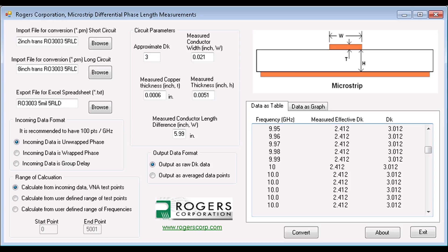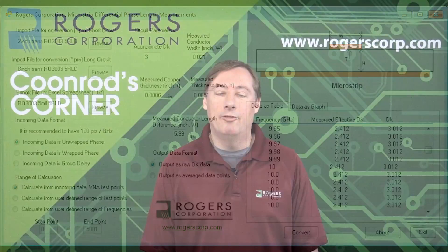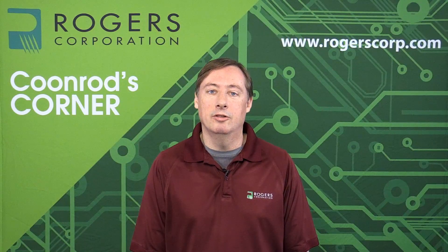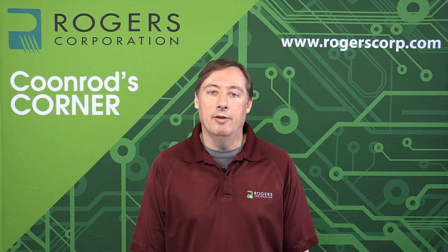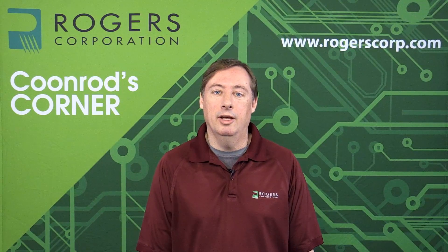You can also click on the tab for graphing data in graphing form. Then you can see the graph of dielectric constant versus frequency. This software will generate an output file that is a comma delimited file that can be read into an Excel spreadsheet. From that you can use the Excel functions to generate a graph of dielectric constant versus frequency as shown here.